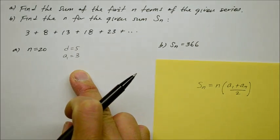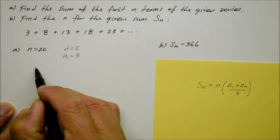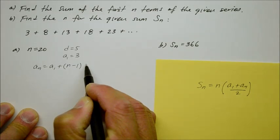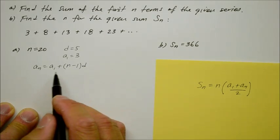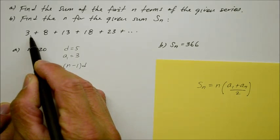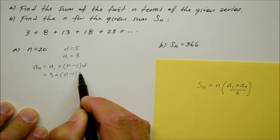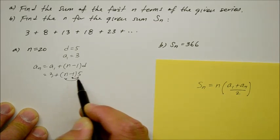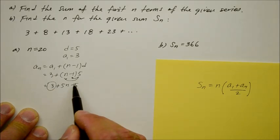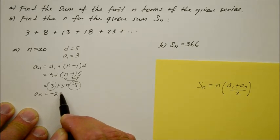Given that information, we can find the general rule of the sequence. The rule is a sub n equals a sub 1 plus the quantity of n minus 1 times the common difference d. So a sub 1 is 3, plus n minus 1 times 5. Using the distributive property, we get 3 plus 5n minus 5. Combining like terms, the general rule is a sub n equals negative 2 plus 5n.